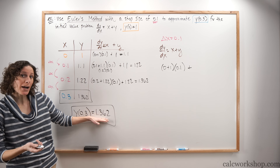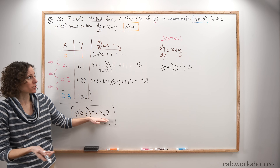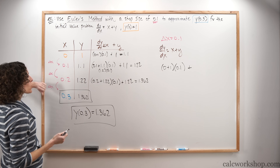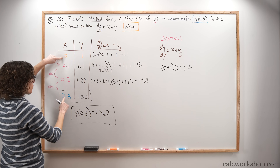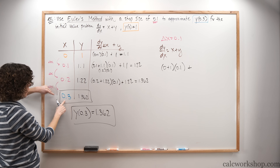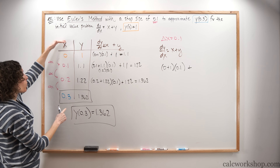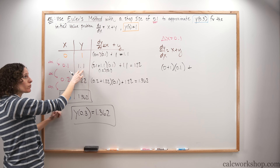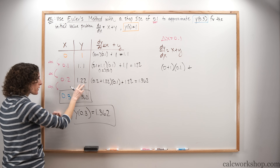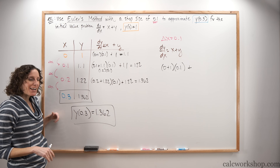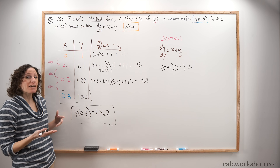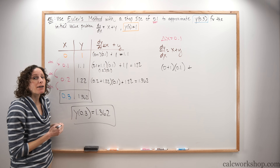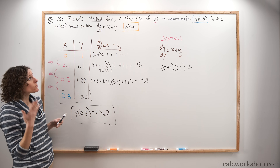We found our y value without solving the differential equation and without graphing a slope field — just using the iterative table method. We plugged in the initial condition, determined the step values for the first column, then kept taking each new y value into the next row. Because our step size is so small, this gives a very close approximation to the actual solution. Let's look at another question.